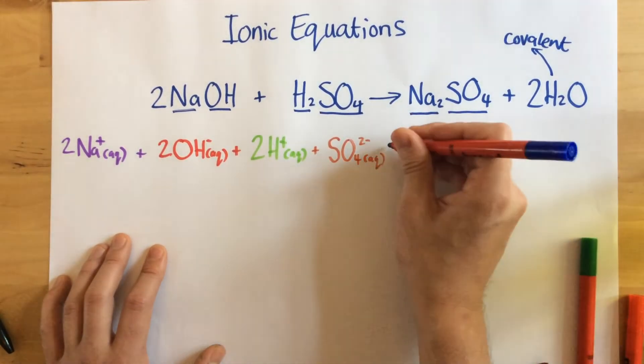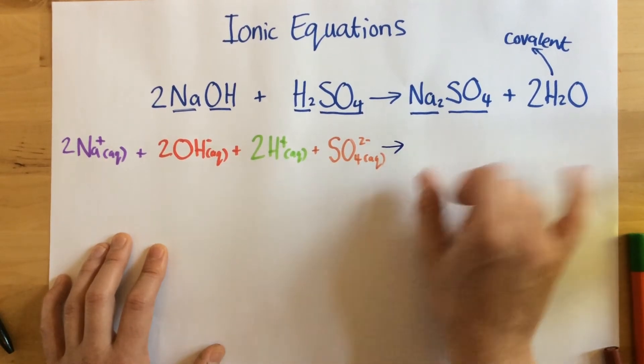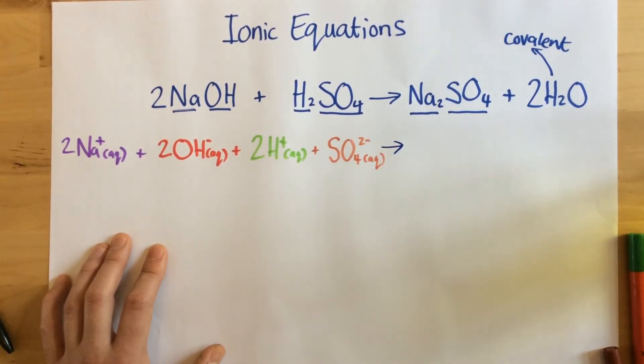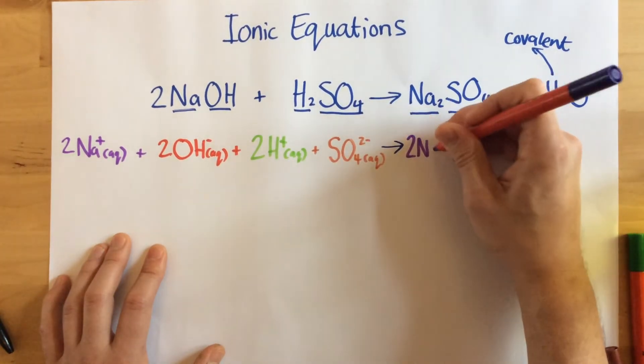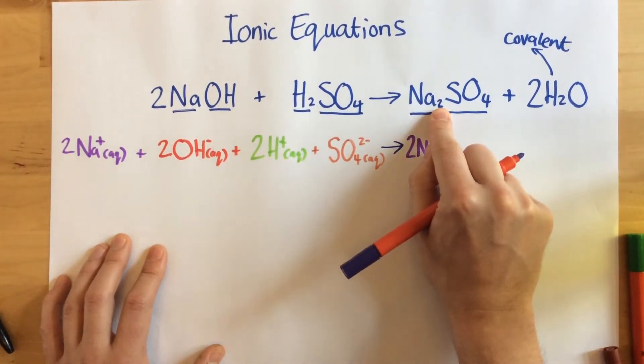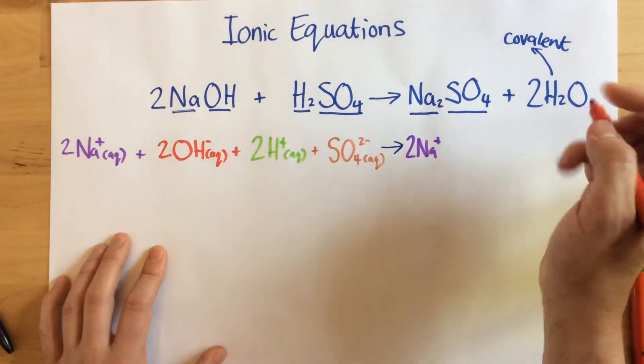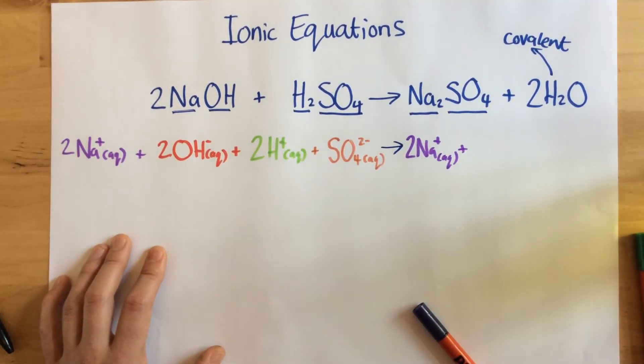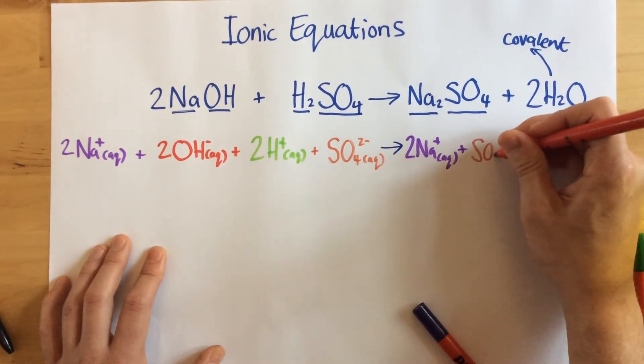And finally, let's do the substances on this side of the equation, so my products. So again, I'm going to have 2Na+, because it shows I've got two of these sodiums. And so in solution, they're going to have two of those. I've also just got one SO4, which has a two minus charge.